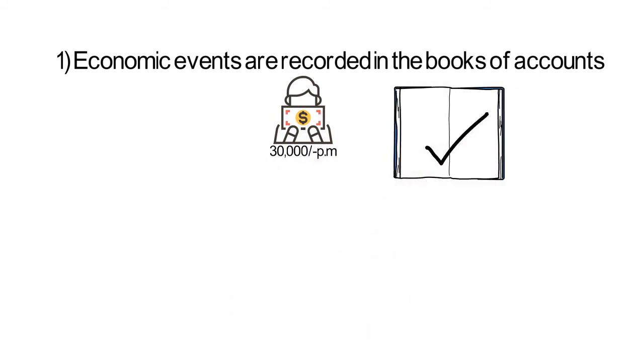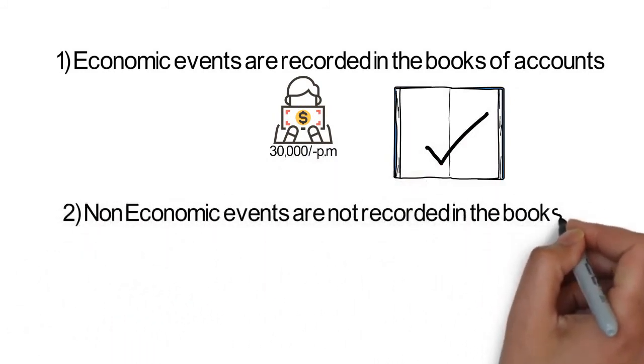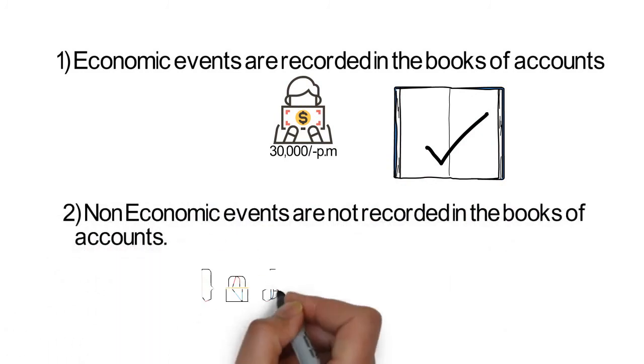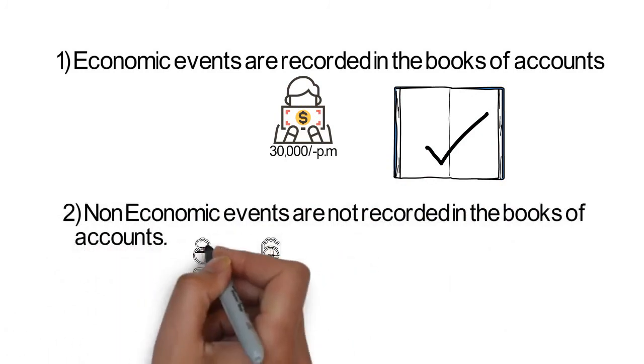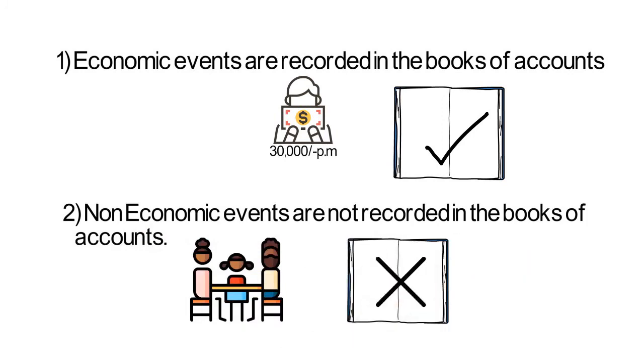Second point, non-economic events are not recorded in the books of accounts. Food that was cooked by Aisha for her family will not be recorded in the books of accounts as she was not getting paid for that. She was doing it out of love and affection.